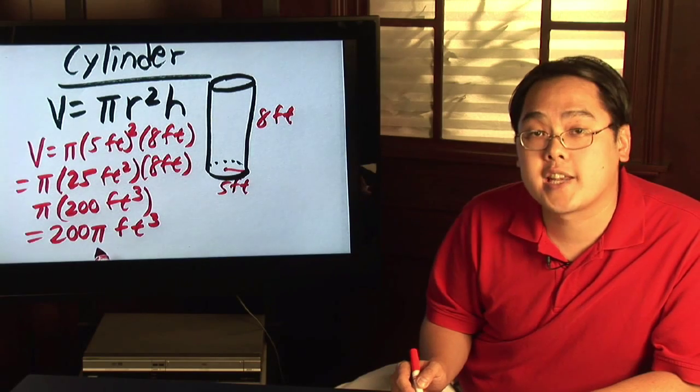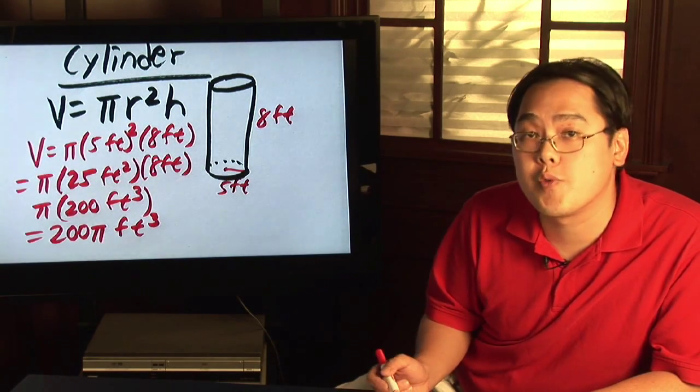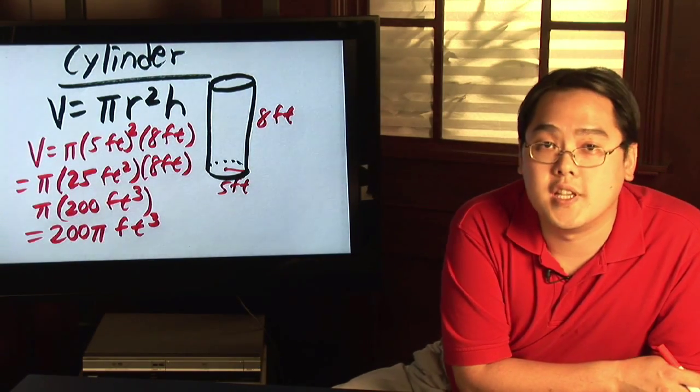You could either plug in the exact value for pi, or as exact as it gets, or the approximate value which is three point one four, and you'll get a decimal representation of the volume of the cylinder.